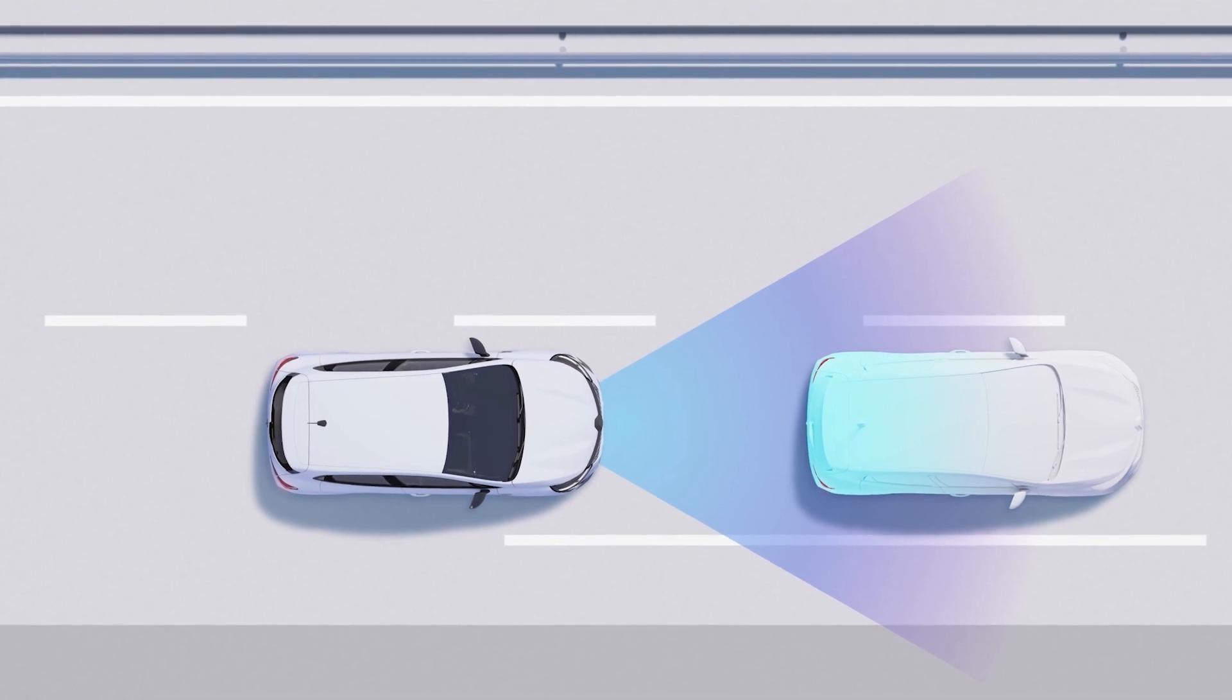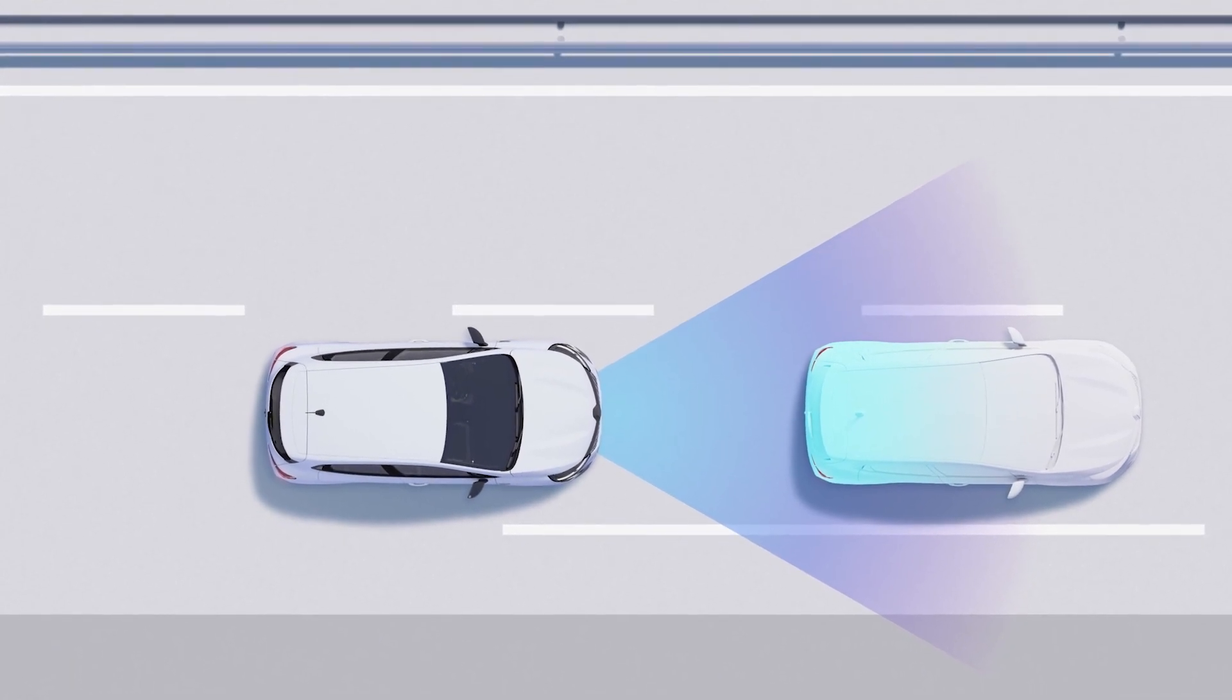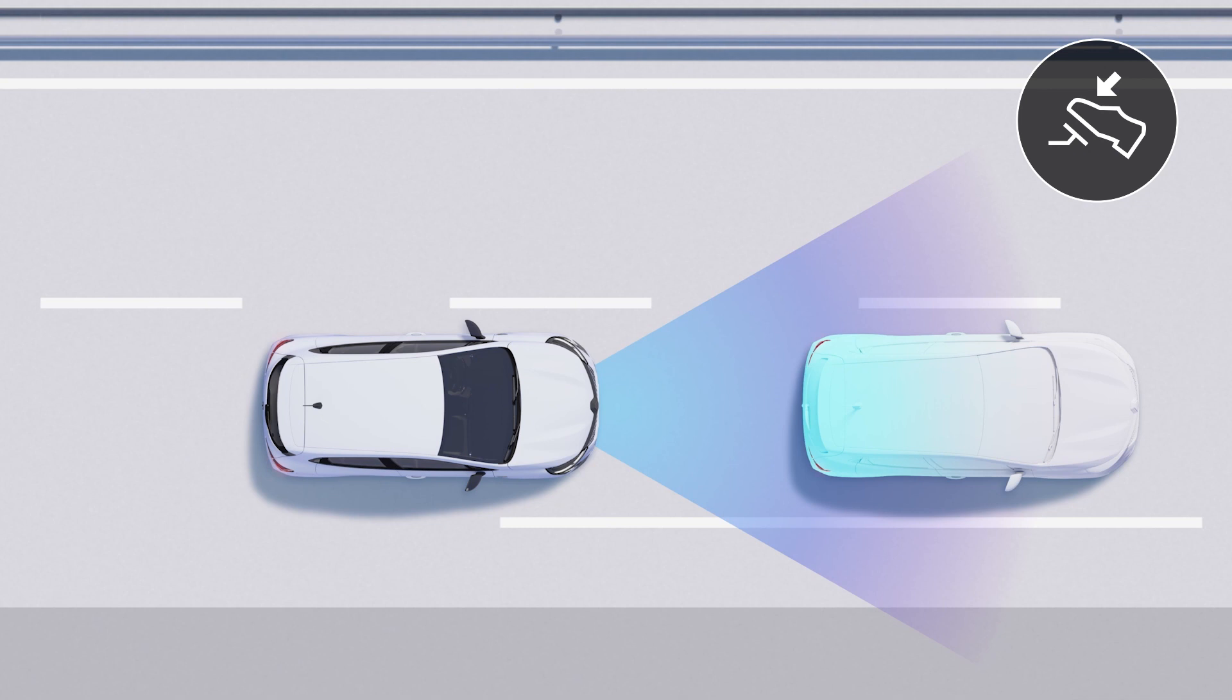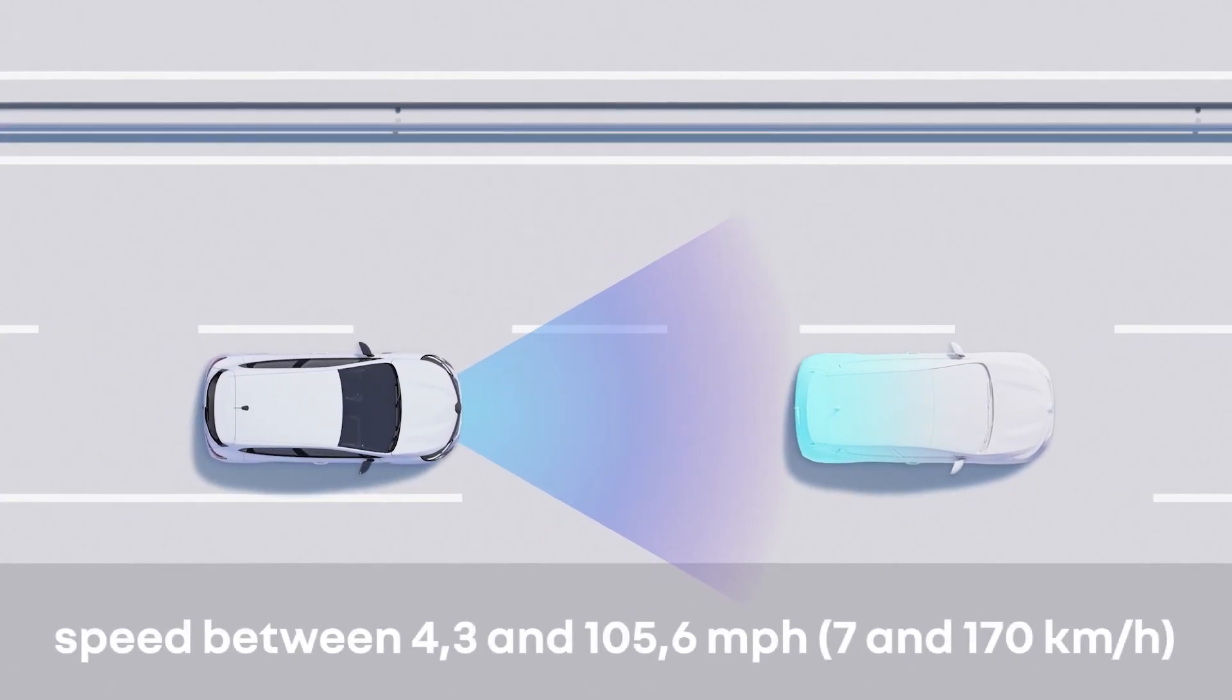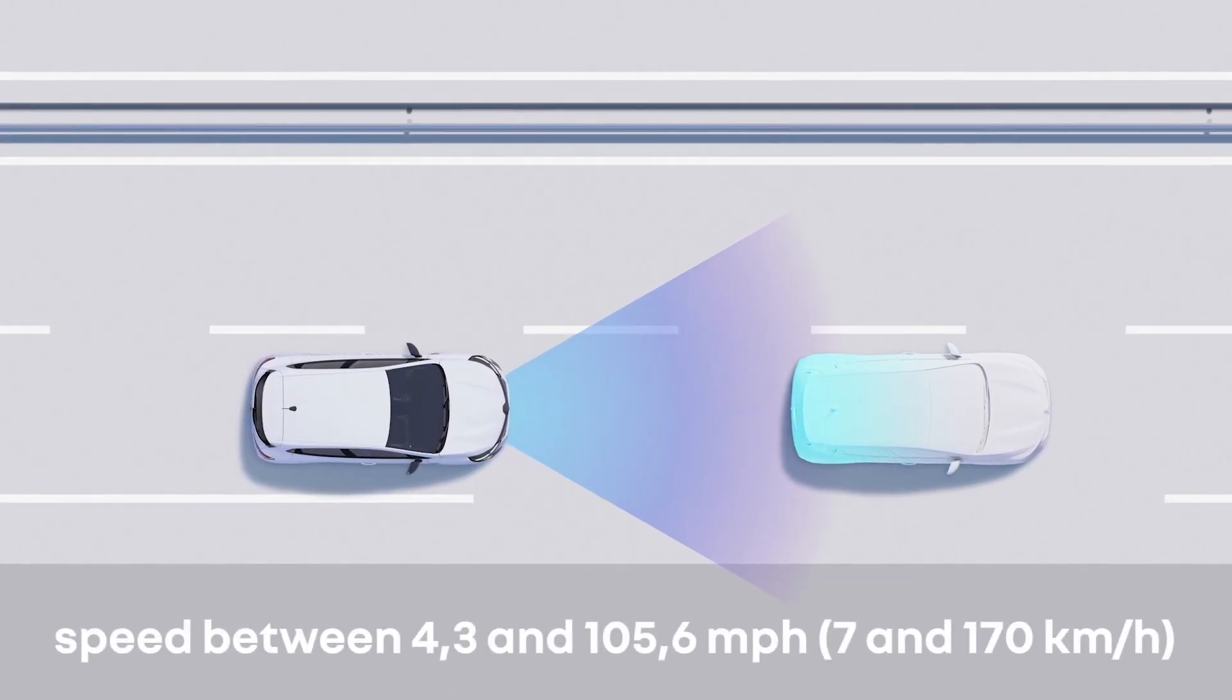In the case of a complete halt, the system ceases to apply the brakes. If necessary, you must press the brake pedal to keep the vehicle stationary. Note that active emergency braking detects moving vehicles when you are driving at between 4 and 105 miles per hour or 7 and 170 kilometers per hour.